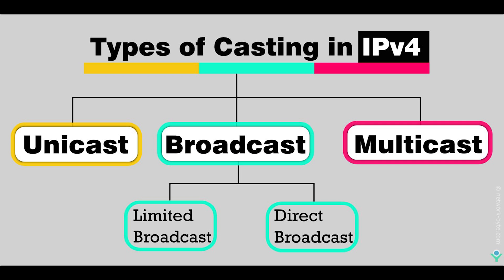If the host hasn't joined the group, the receiver ignores the packets at the hardware level, eliminating platform software resource consumption. There are two types of broadcast: limited and directed. In a limited broadcast, data reaches from a source to all hosts in the same network. In a directed broadcast, a host in one network sends a message to all hosts in another network.